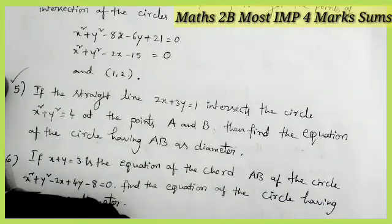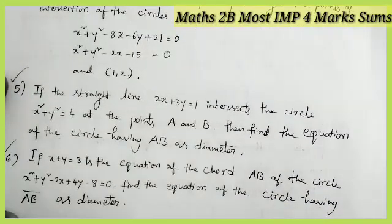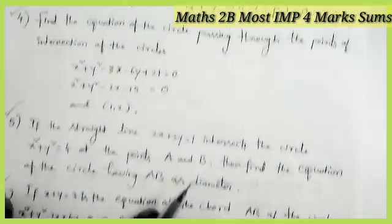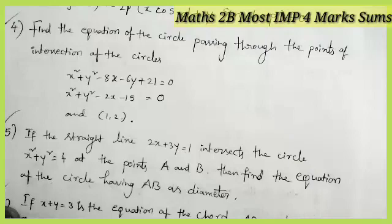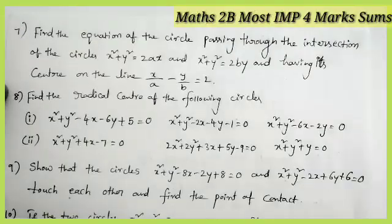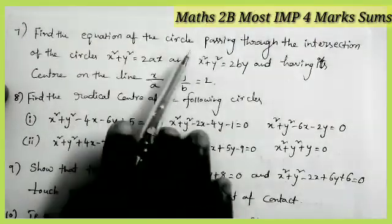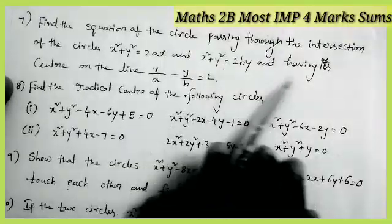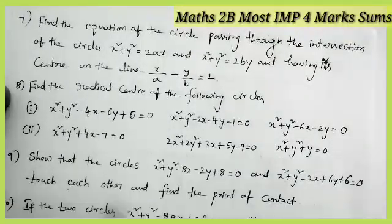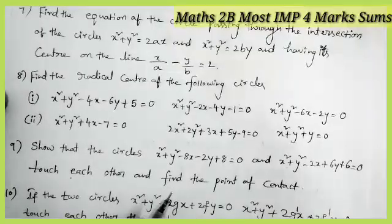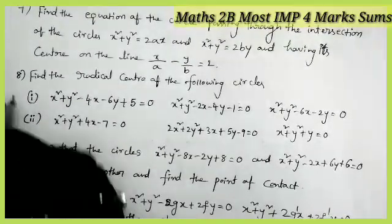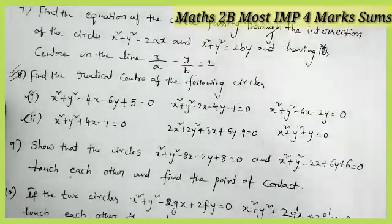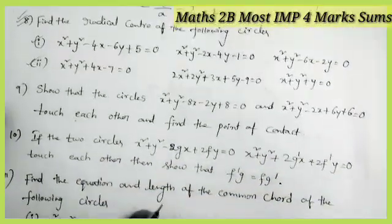Questions 2, 5, and 6 are of the same model and are very very important. Find the equation of the circle passing through the point of intersection of the circles and having the center at a given length — important sum. Find the radical center of the following circles — very very very important sum, and also very easy.